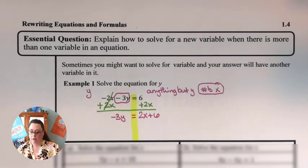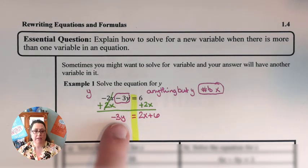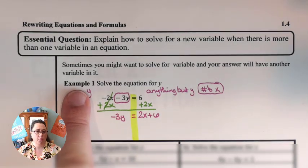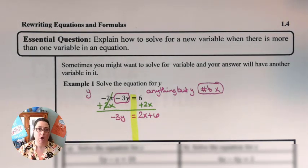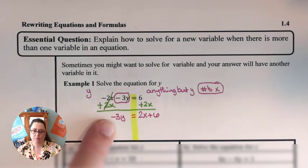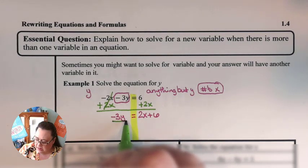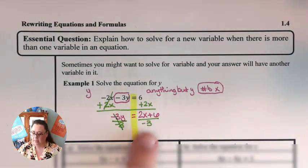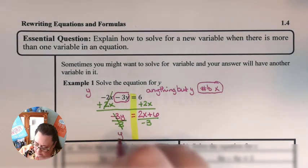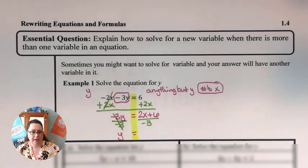Now we identify our variable term — negative 3y — and we have just a single term with y. Now we can break that term apart. This is negative 3 times y, and since multiplication is undone by division, we divide both sides by negative 3. Negative 3 divided by negative 3 is 1, so this side is just y. We were asked to solve for y, and now y is isolated.